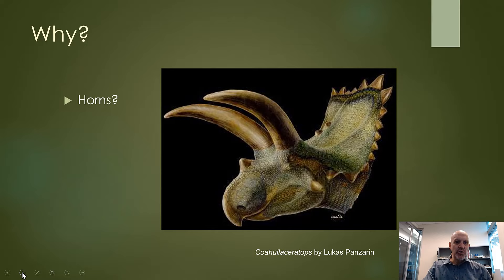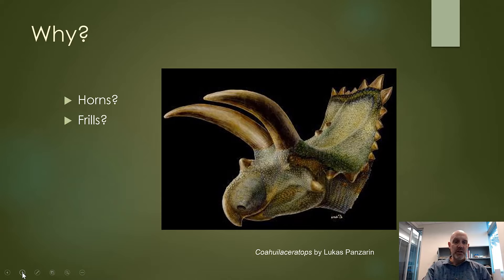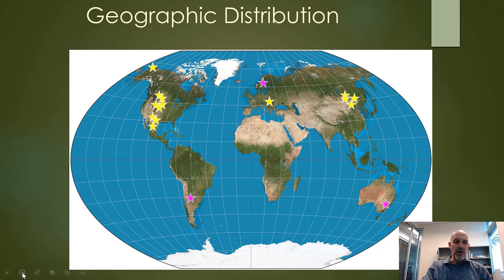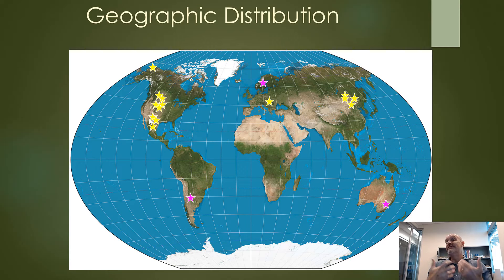Why the horns? Probably most likely for defense, but also possibly for sexual attraction of mates. Geographic distribution: for the most part they're found in North America and in Asia and Europe. All of the derived or more evolved forms are only found in North America, although you do have Protoceratops over in China.